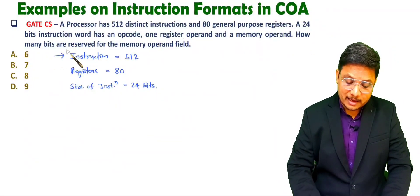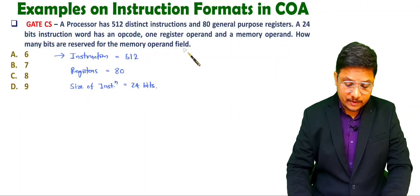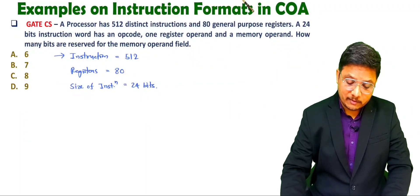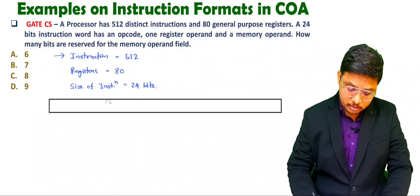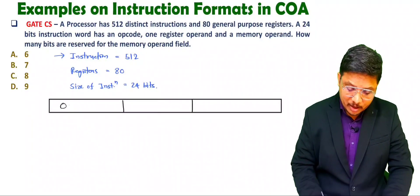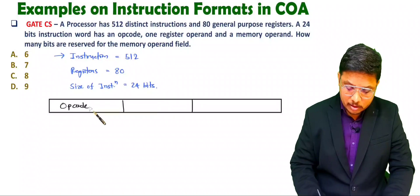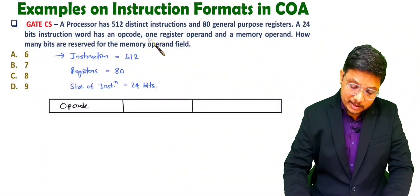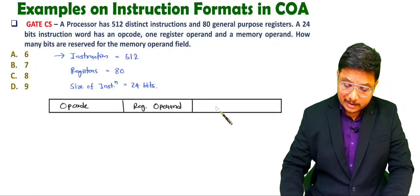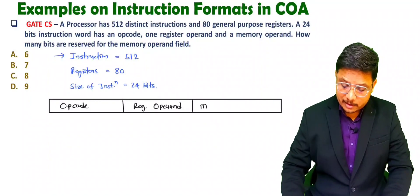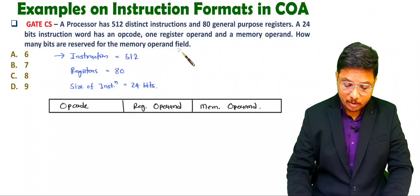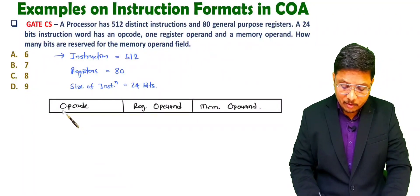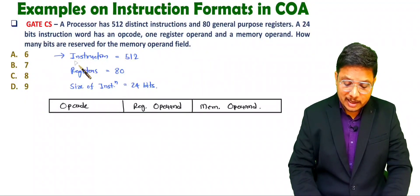The question asks how many bits are reserved for the memory operand field. Let me show you how the instruction format looks. In the instruction format we will have opcode, one register operand, and a memory operand. The question is to find how many bits are there for the memory operand. The opcode size is purely based on how many instructions there are.